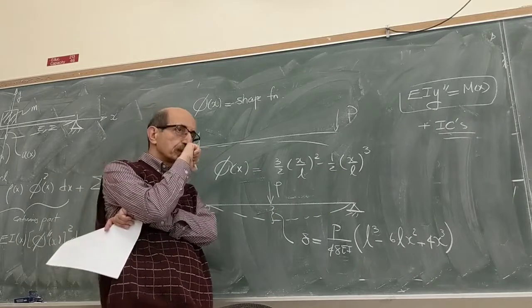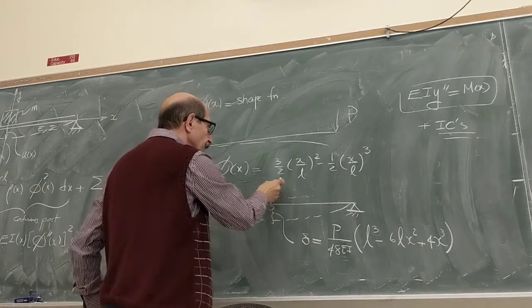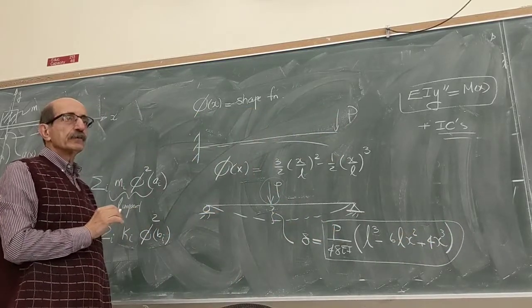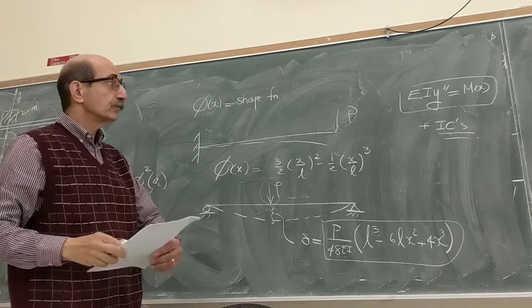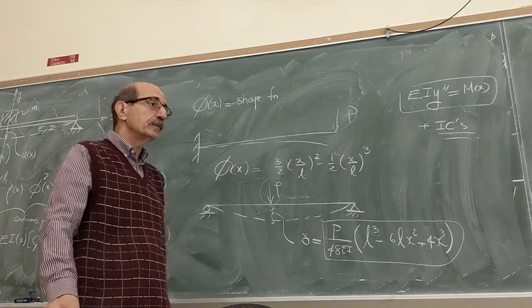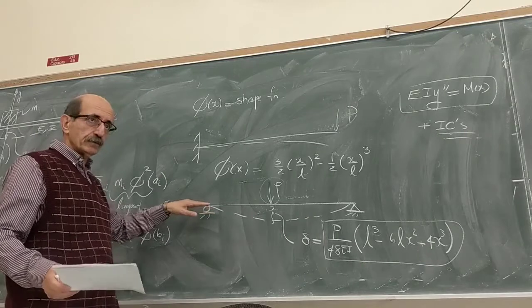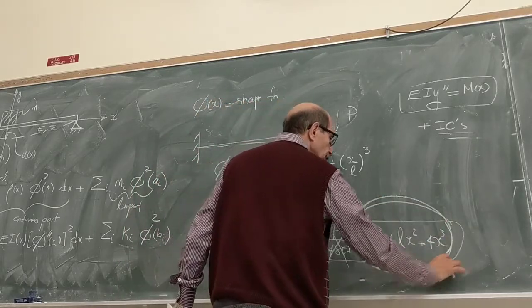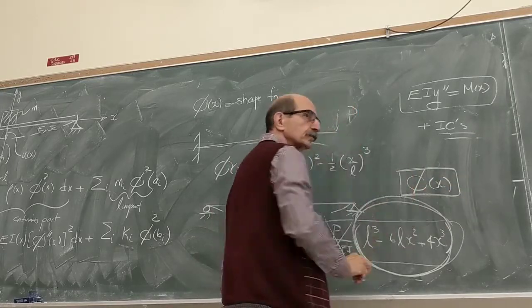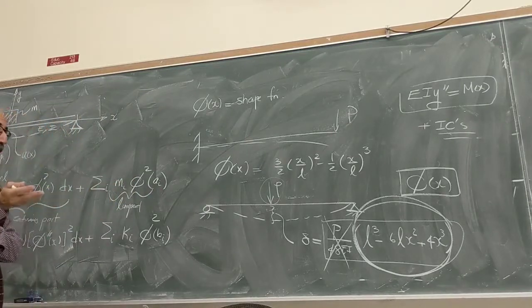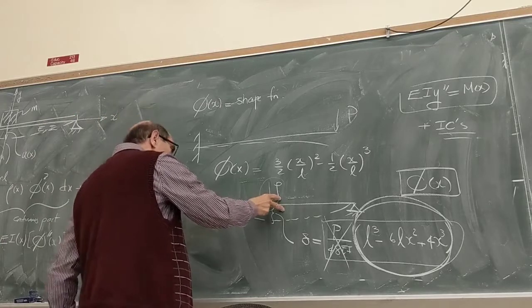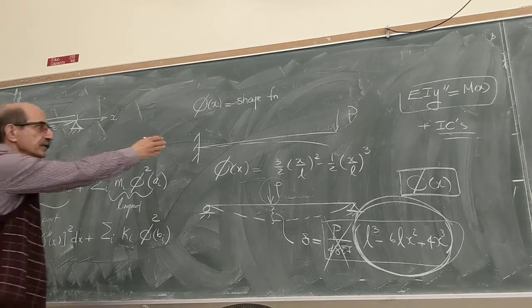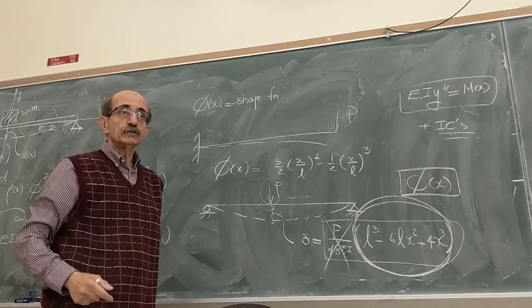Remember phi of x is what I call the shape function. This comes from based on the analogy with the static deformation. For a simply supported beam, phi of x is based on the displacement due to a load at the center, which describes the qualitative shape of the deformation even when the beam is subjected to a dynamic displacement. So in this case, that's what we're going to use. Let's just substitute that in here.